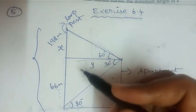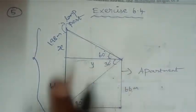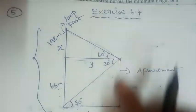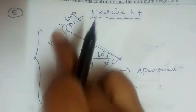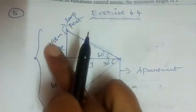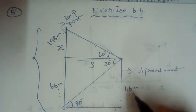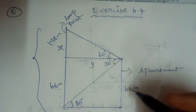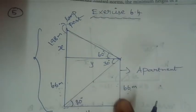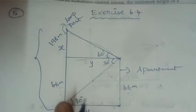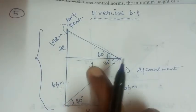The difference between the height of the lamppost and the apartment: the lamppost is 198 meters and the apartment is 66 meters, so the difference is 198 − 66 = 132 meters. For the third part, the distance between the lamppost and the apartment is y, which we already found.